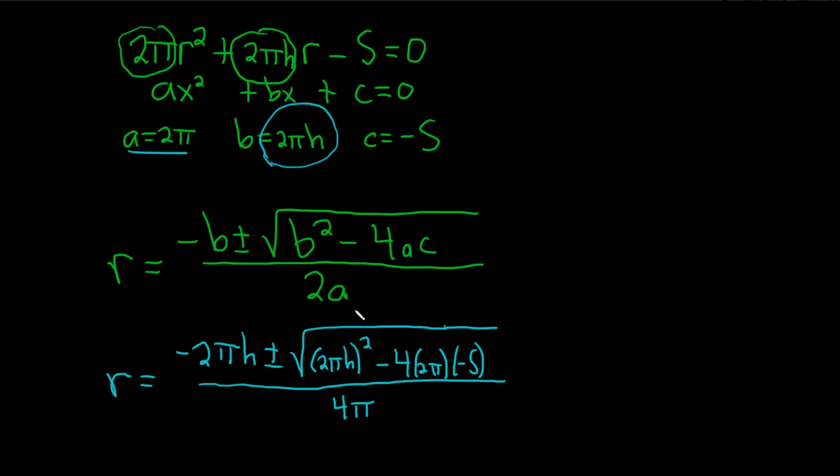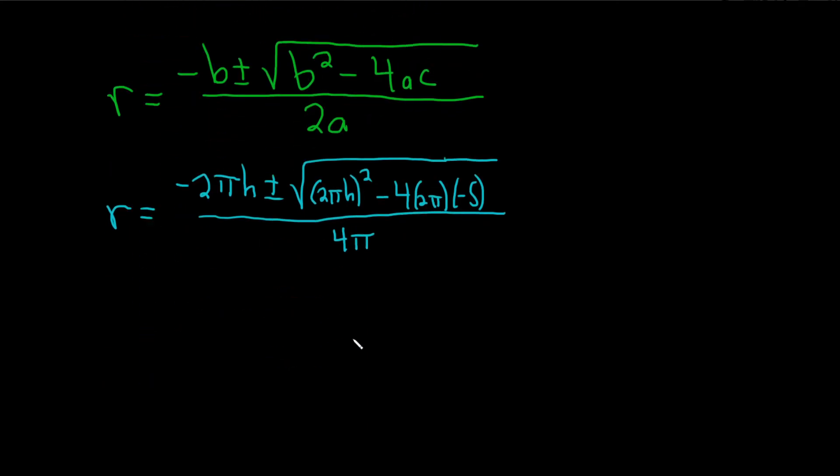Let's see what we can do here to clean this up. So r is equal to negative 2πh plus or minus the square root of, so here we square the 2, so we get 4, we square the π, so we get π², and we square the h, so we get h². And then look at this, negative and negative, we're going to make a plus, it's going to be 8, because 4 times 2 is 8. So we get 8πs all over 4π.